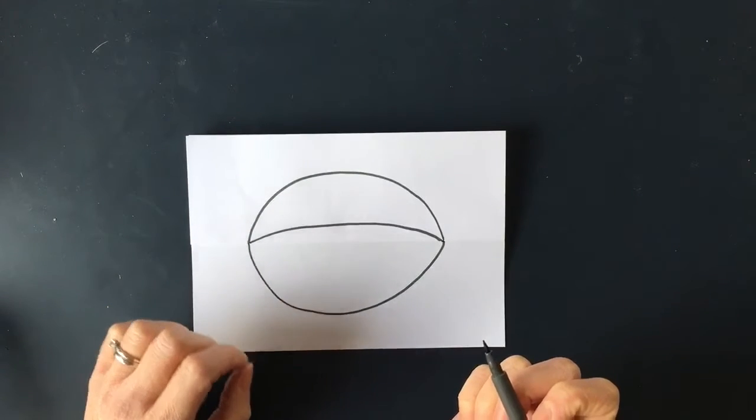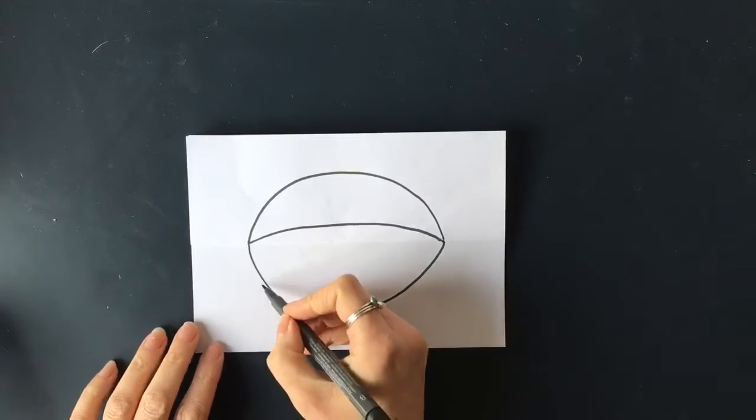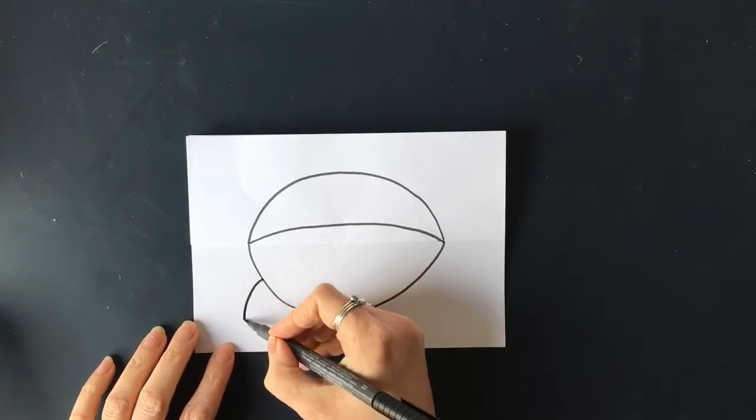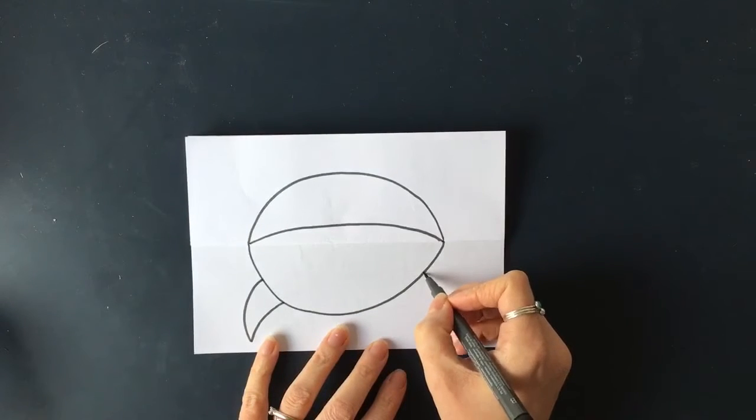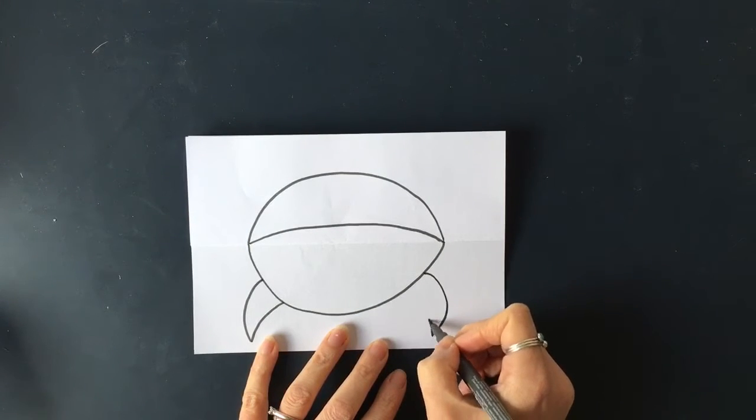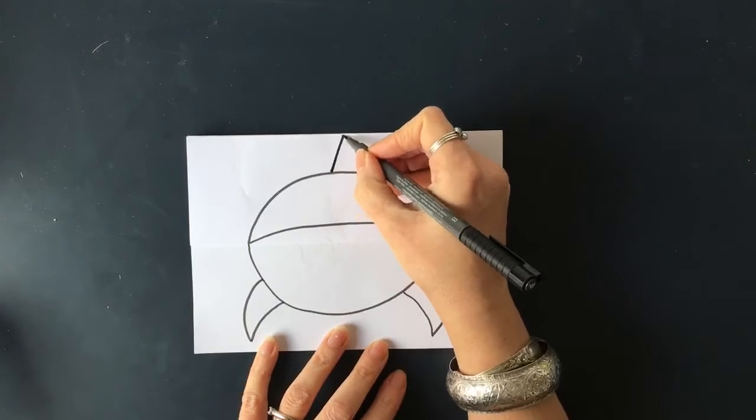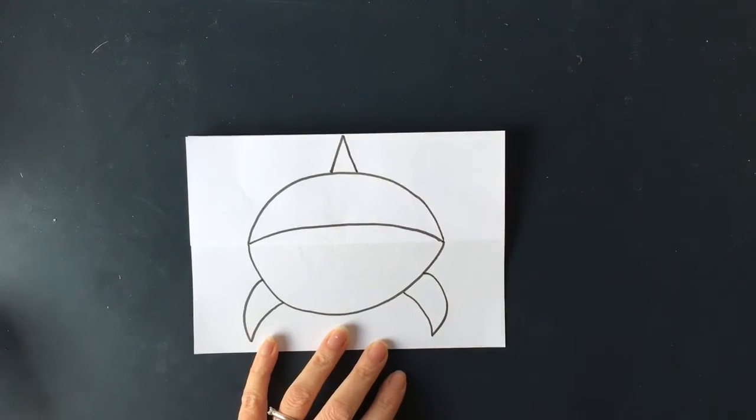Now we are going to do the fins and the tail. So I'm going to just do like a little curve this side and curve that side, and a triangle for the tail at the back.